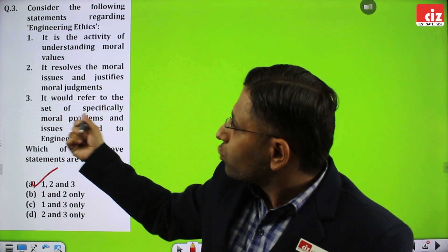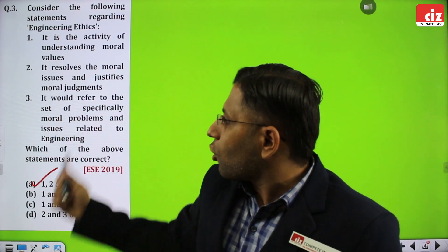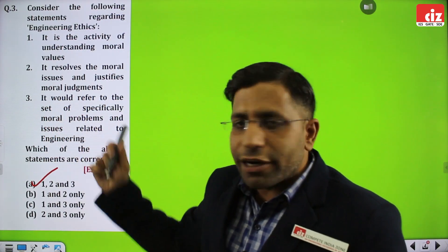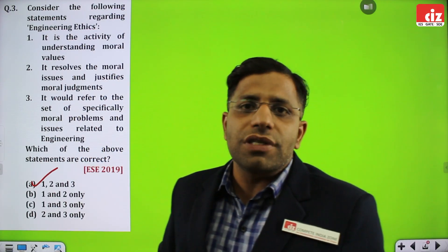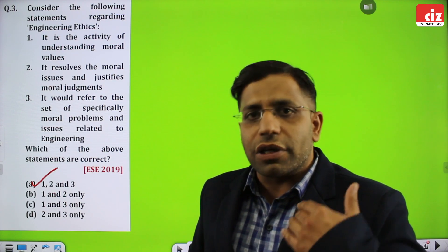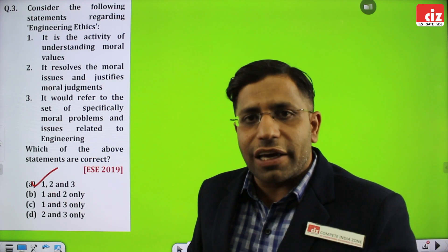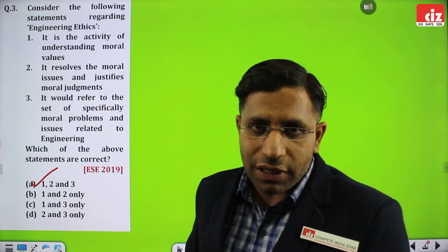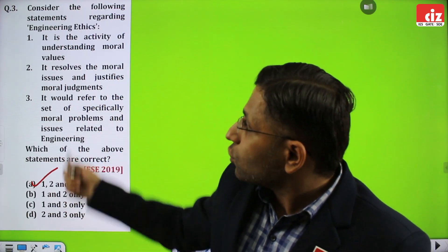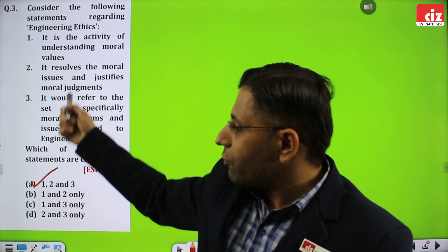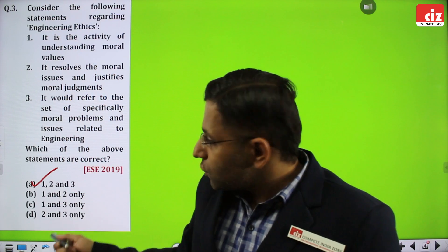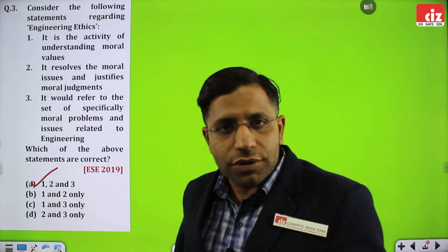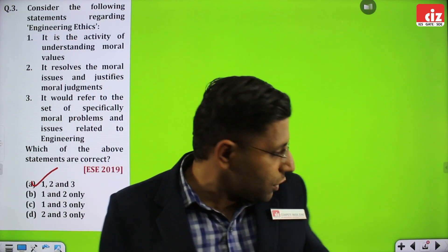Statement 3 — it refers to the set of specifically moral problems and issues related to engineering. In the engineering profession, issues arise related to ethics, and by balancing all of them, one has to make a decision. So overall, all three values are appropriately addressed in this question. Therefore, 1, 2, and 3 are all correct options. Let us proceed with the next one.